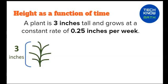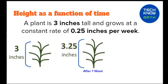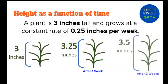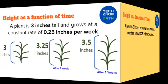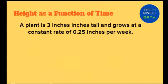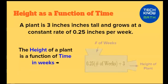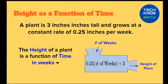Let's look at a real life example. Height is a function of time. A plant is 3 inches tall and grows at a constant rate of 0.25 inches per week. So notice it starts at 3 inches. After one week, it's grown to 3.25 inches. And after another week, it's grown to 3.5 inches. Height as a function of time is going to, in our function machine, we would input the number of weeks and output the height of the plant. If the number of weeks is multiplied by 0.25 and 3 is added to the result, the output will be the height of the plant in inches.